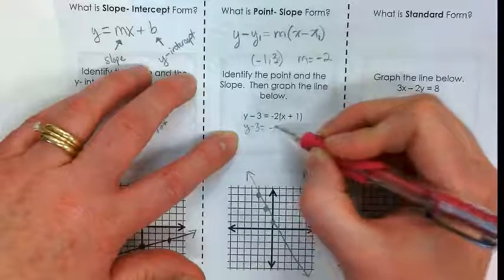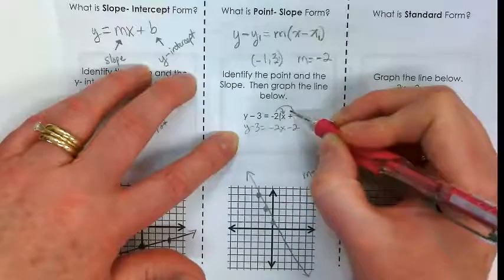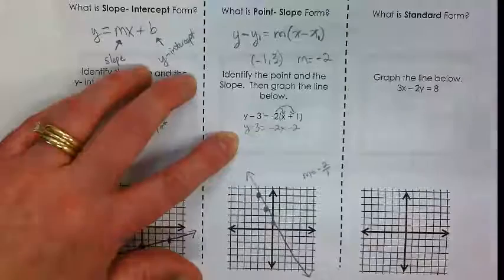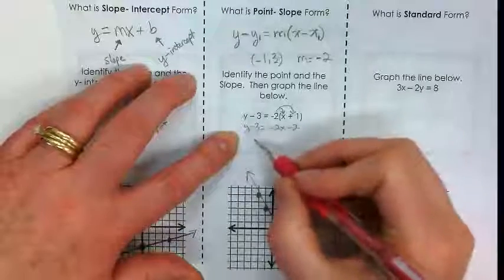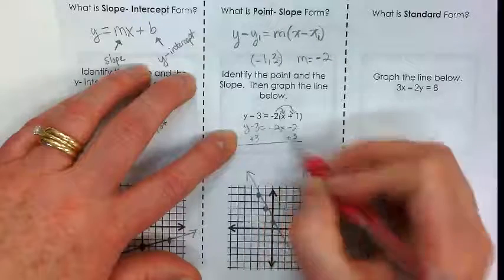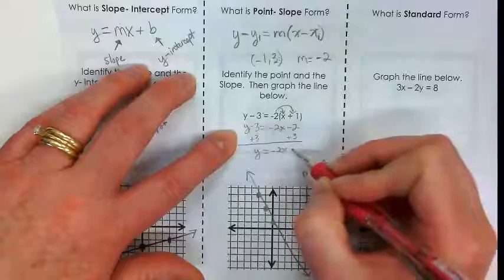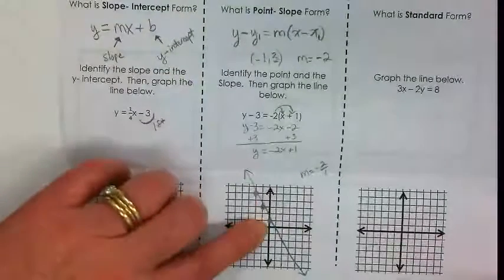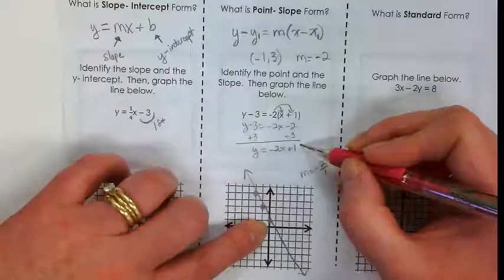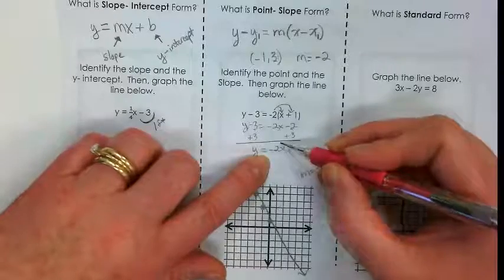But if you have the equation, you can turn it into y equals mx plus b. Y minus 3 is equal to negative 2x minus 2, because what did I just do? The claw. I did the claw. I distributed the negative 2. I'm going to add this 3 to both sides. And I get y is equal to negative 2x plus 1. Did we cross it positive 1? Yeah. There's our b. That's our origin. Is this our slope? Yeah.